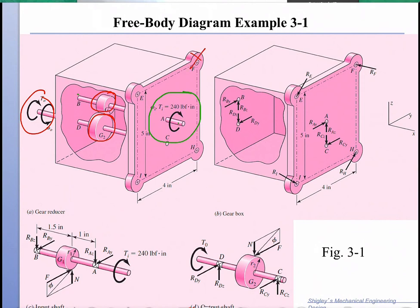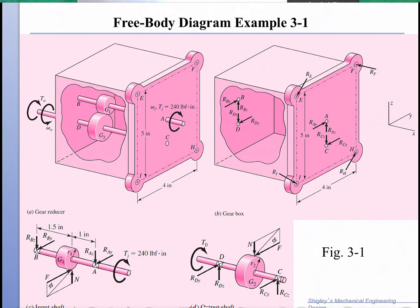The gearbox is attached at points E, F, G, and H through bolts, so there are reactions from the larger system — for example, a wall or another machine. We also note that the coordinate system has x along the shaft direction, y, and z, so both the input and output shafts are aligned in the x direction.